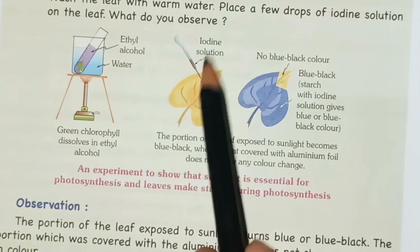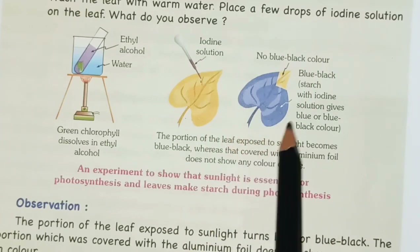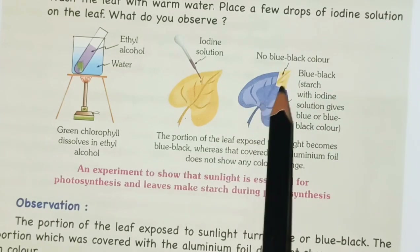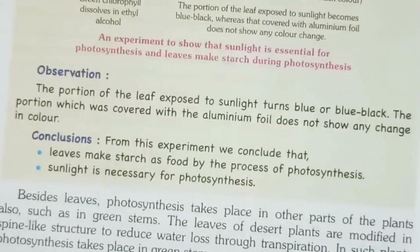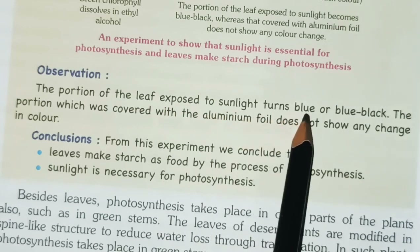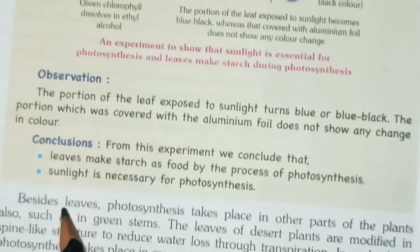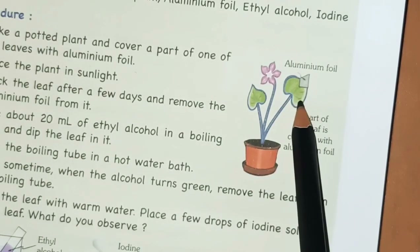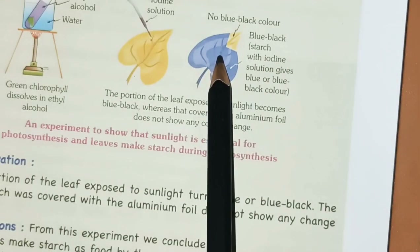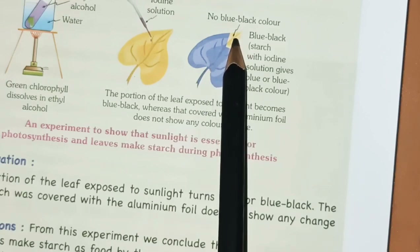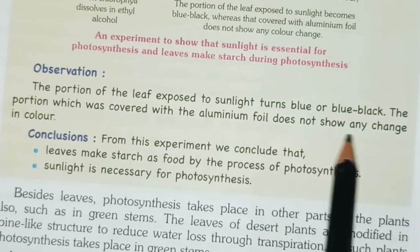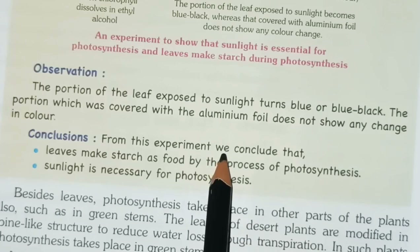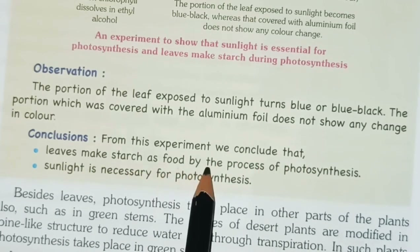After applying the iodine solution, the entire leaf changes to blue color, except the part that was covered with aluminium foil. The portion of the leaf exposed to sunlight turns blue-black, but not the portion where aluminium foil was present. Conclusion: From this experiment we conclude that leaves make starch as food by the process of photosynthesis, and that sunlight is necessary for photosynthesis.